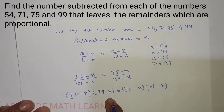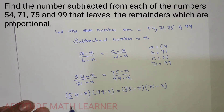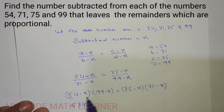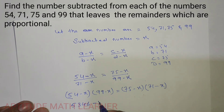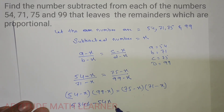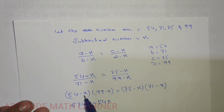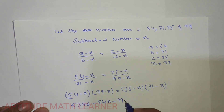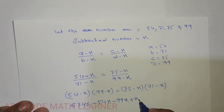After cross multiplying, the left side becomes: 54 multiplied by 99 equals 5346, then minus 54x, minus 99x, and minus x times minus x gives plus x squared.